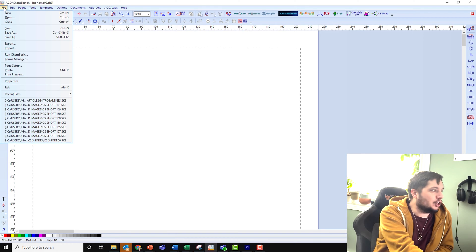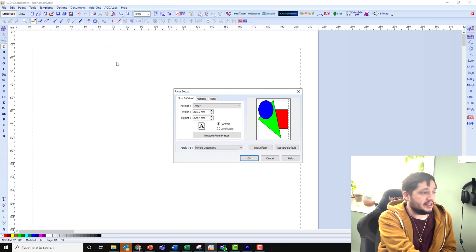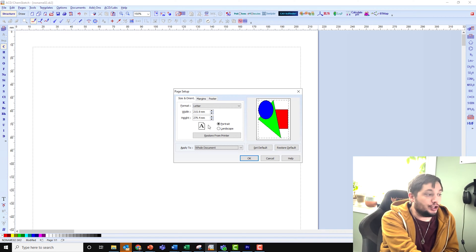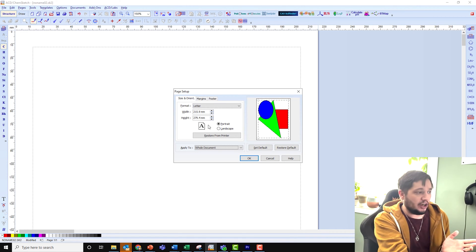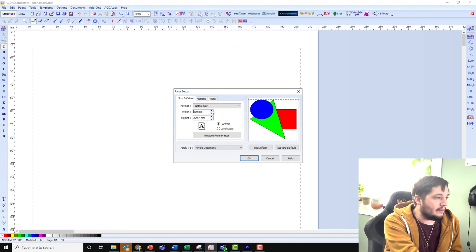So go right here into the file menu and then you can go into the page setup options here. And then this allows you to adjust the size of the page. The default here is the letter size, but you can increase the width to whatever you want.